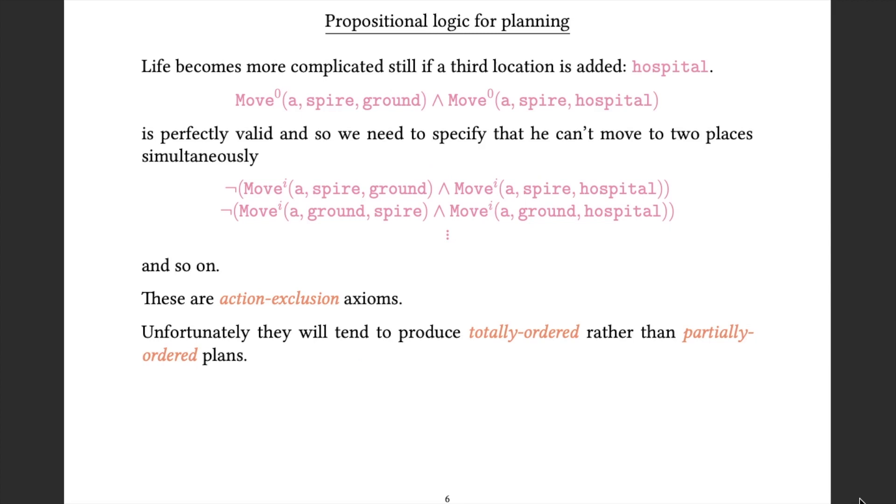Now if we add a third location, then things get more complicated. Because we may find that moving A from the spire to the ground and from the spire to hospital. And once again, I don't think that A wants to be moved in both directions at the same time. So we're going to need to specify that A can't move to two places at once. And that gives us action exclusion axioms. Here we're going to say that at step i, A can't move from the spire to the ground and from the spire to hospital, and so on.